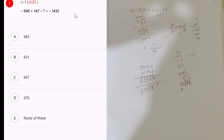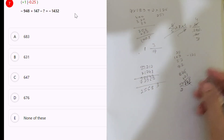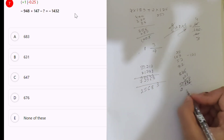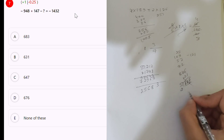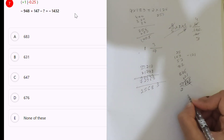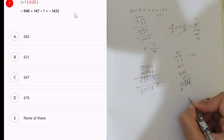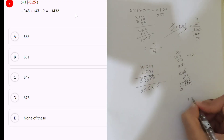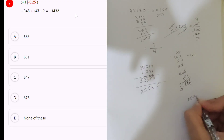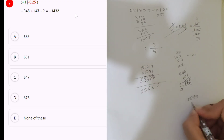Next: 9, 147. Okay, 147 plus 1432, that means 1579, plus minus 948.